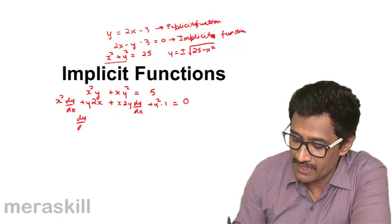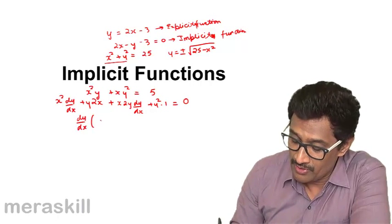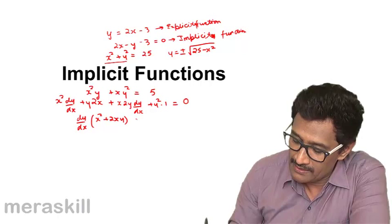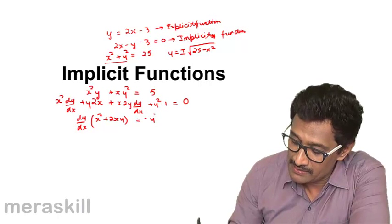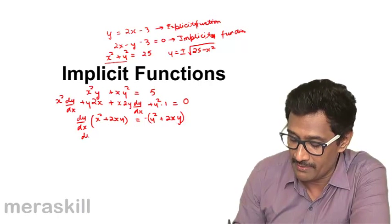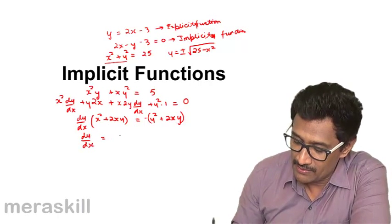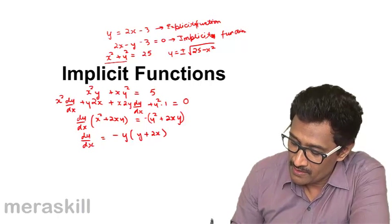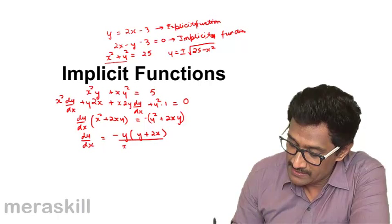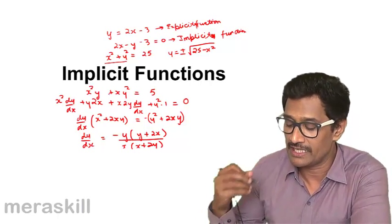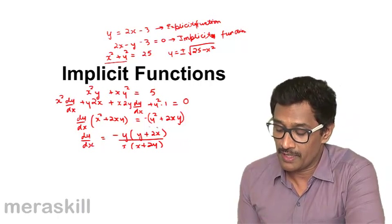Collecting all the dy/dx terms, dy/dx · (x² + 2xy) equals -y² - 2xy, which gives us dy/dx = -y(y + 2x) / x(x + 2y). This is how we differentiate an implicit function.